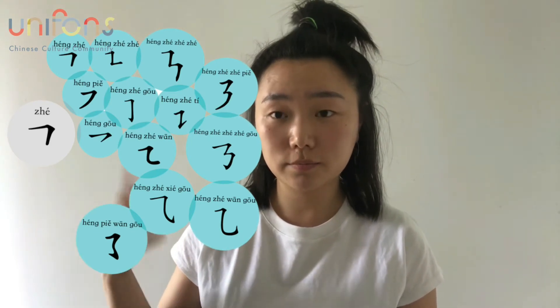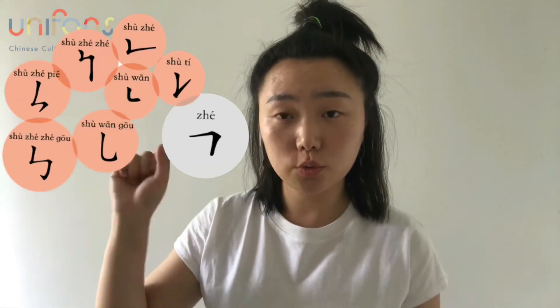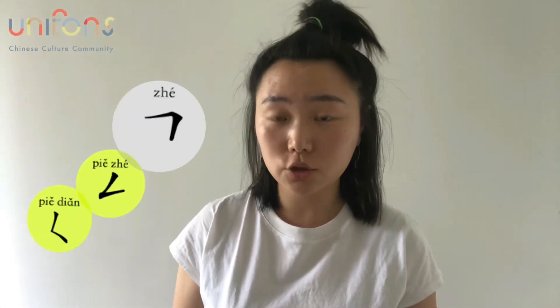There are four families in the group of Zhe, which are represented by four colors. We use dark blue to represent the stroke that starts with Heng, dark orange to represent the stroke that starts with Shu, dark lemon yellow to represent the stroke that starts with Pie, and army green to represent the stroke that ends with Gou.